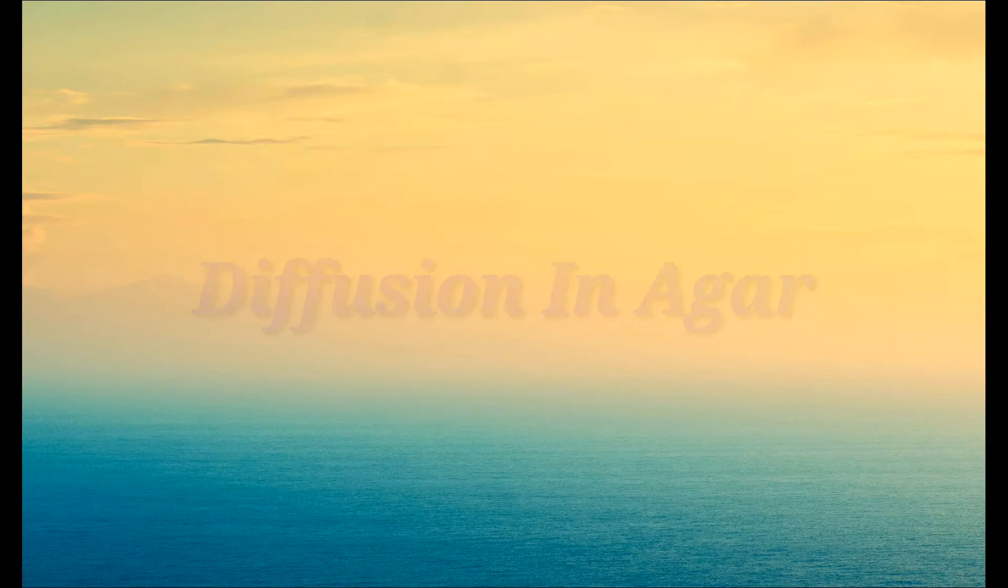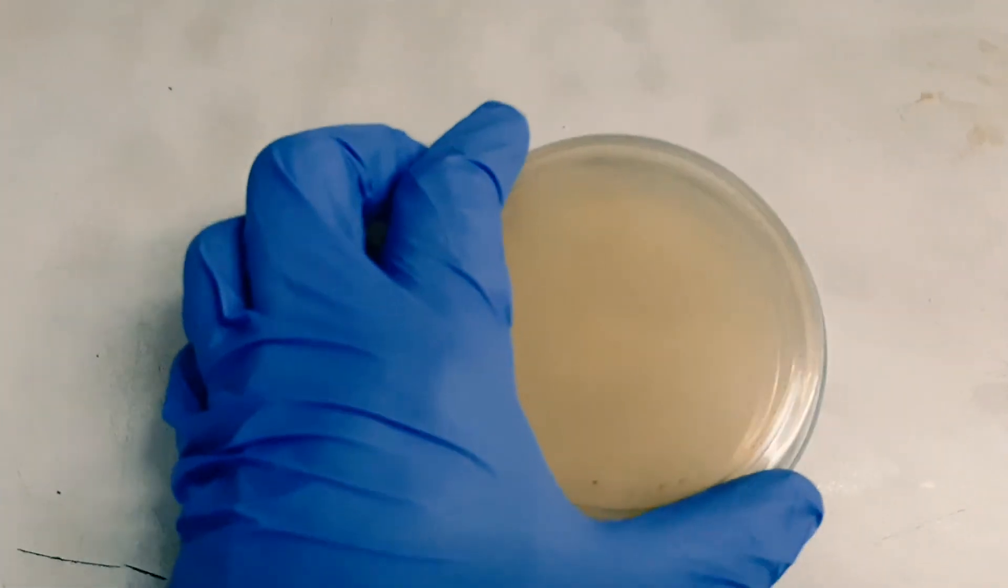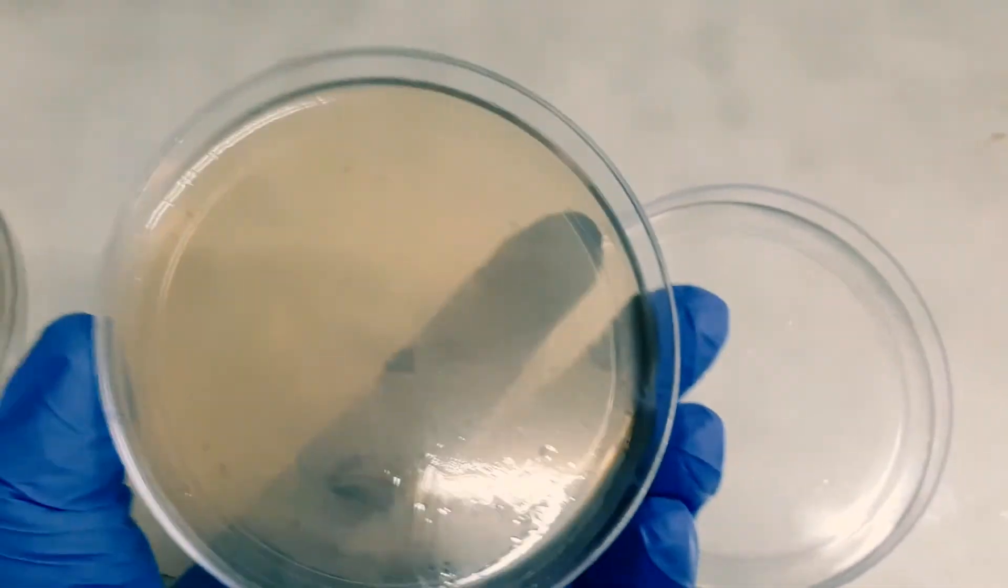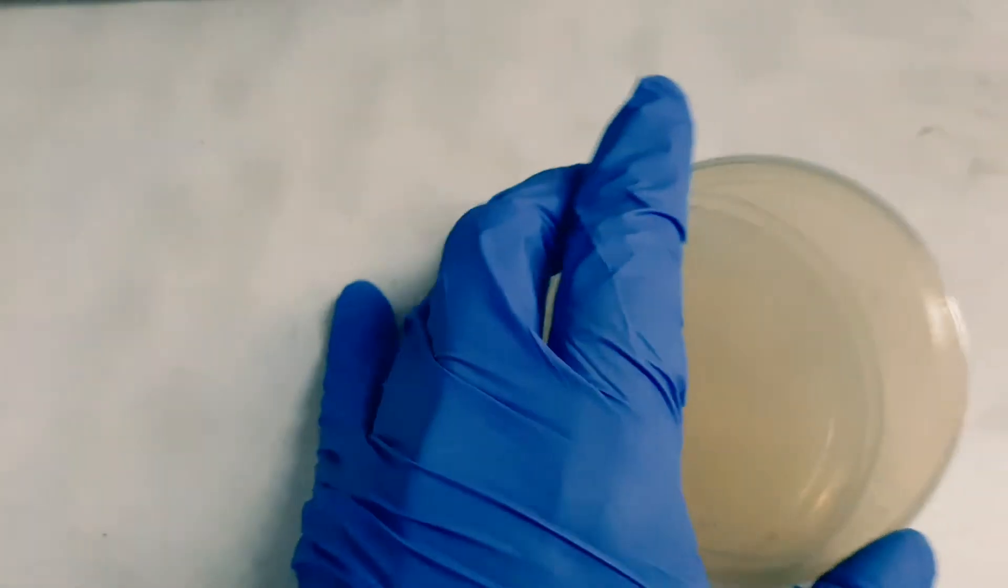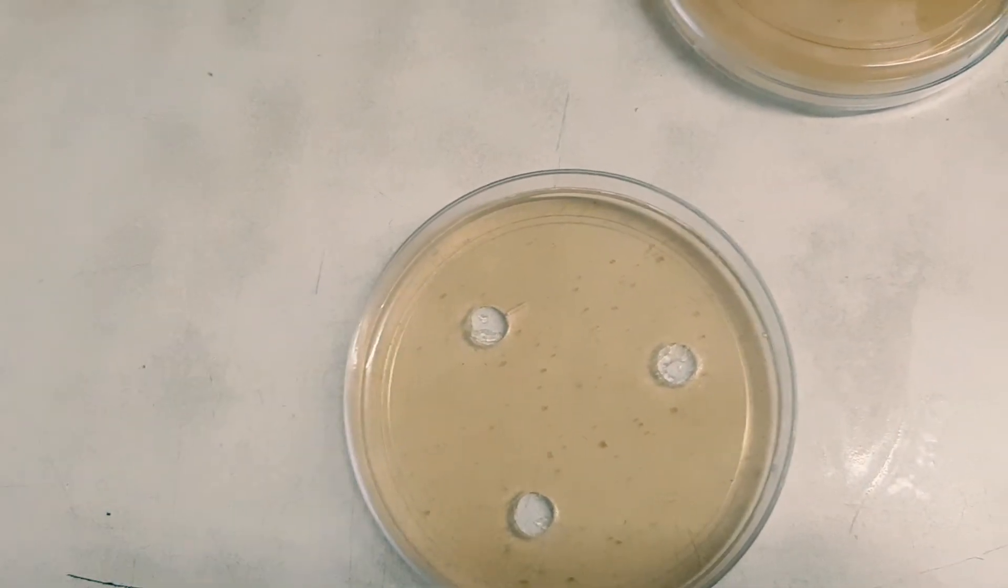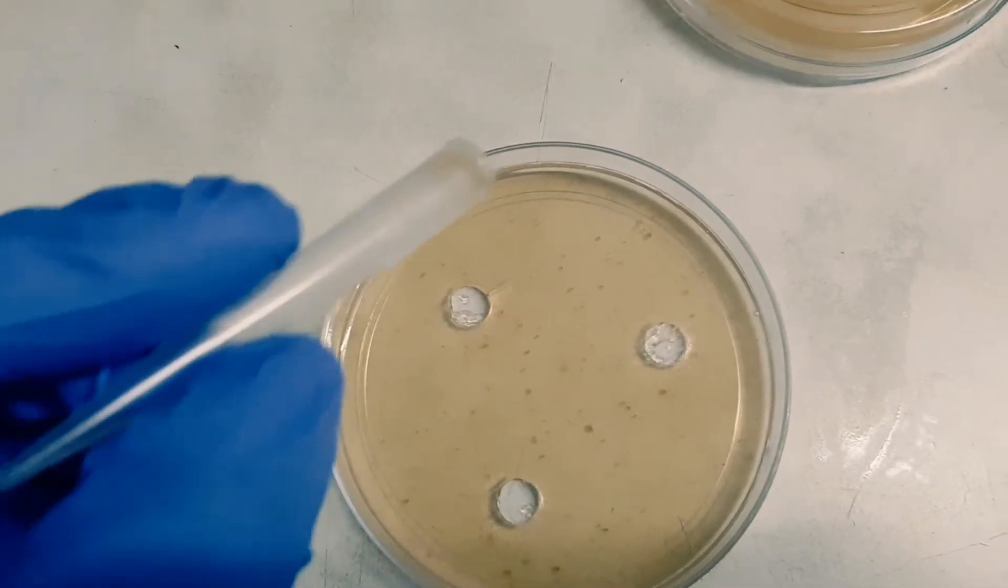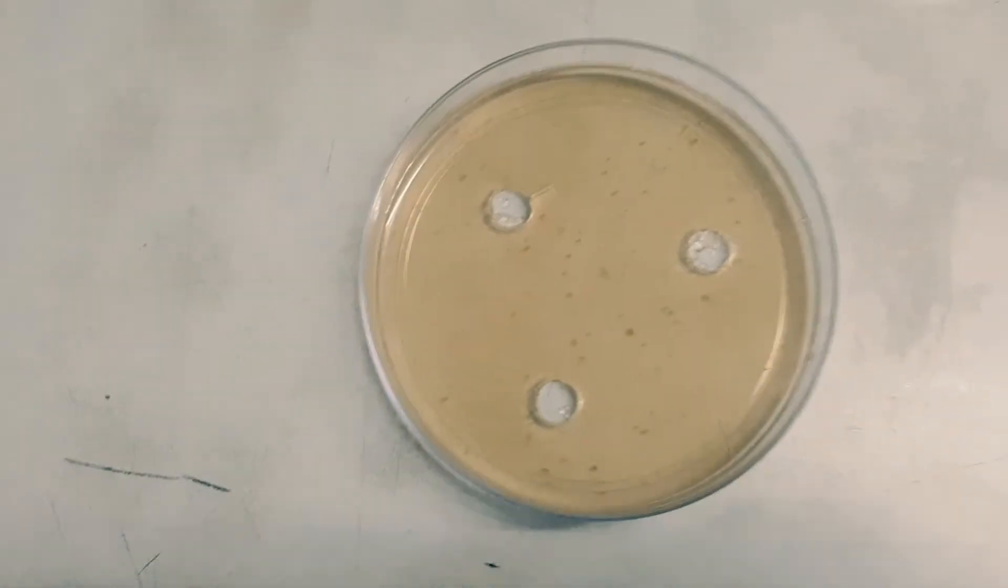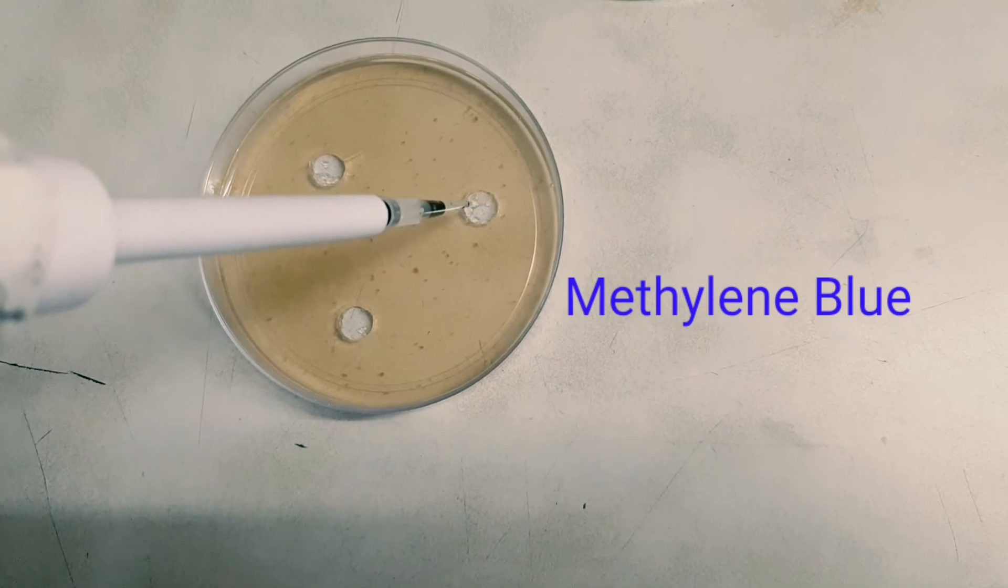Diffusion in agar. So here I have an agar plate. Agar is a semi-solid jelly-like substance. I have made three wells using a pipette tip. Now I am going to pour in Methylene blue.